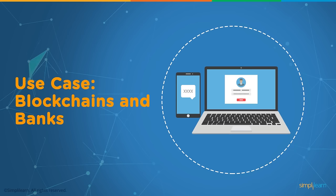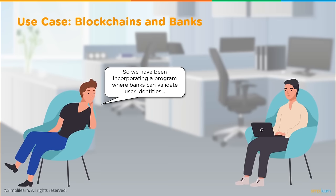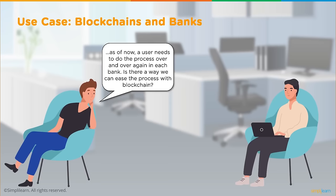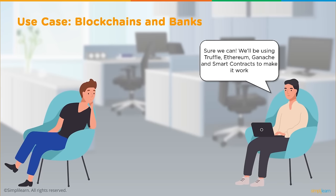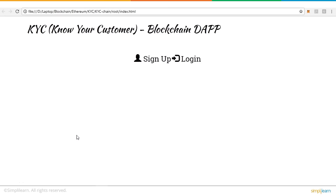Now let's look at a blockchain use case in banking — a KYC application. Currently, users must prove their identity over and over at each bank. With blockchain we can ease this process. We'll use Truffle, Ethereum, Ganache, and smart contracts to build a KYC blockchain application. This KYC application allows banks to perform decentralized KYC of their customers. When a customer walks into an initiating bank, KYC is performed, and subsequent banks can use the same KYC with the customer's permission.